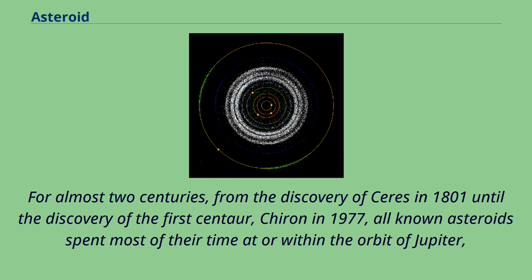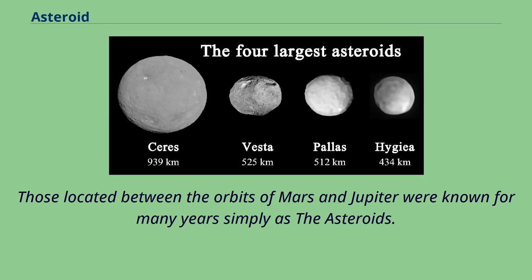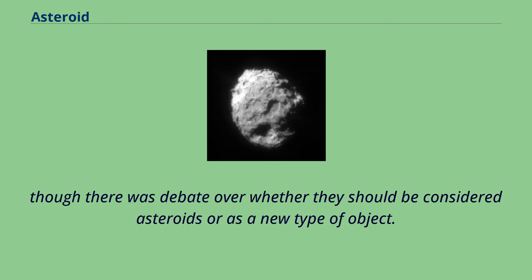For almost two centuries, from the discovery of Ceres in 1801 until the discovery of the first centaur Chiron in 1977, all known asteroids spent most of their time at or within the orbit of Jupiter, though a few such as Hidalgo ventured far beyond Jupiter for part of their orbit. Those located between the orbits of Mars and Jupiter were known for many years simply as 'the asteroids.' When astronomers started finding more small bodies permanently residing further out than Jupiter — now called centaurs — they numbered them among the traditional asteroids, though there was debate over whether they should be considered asteroids or a new type of object.